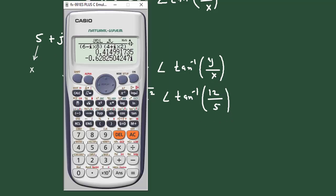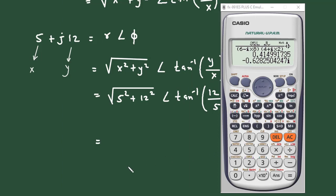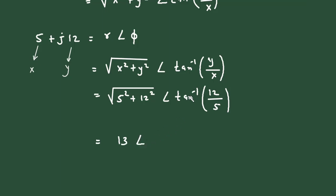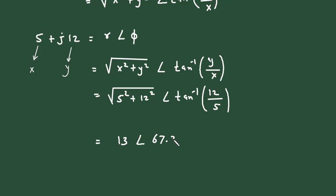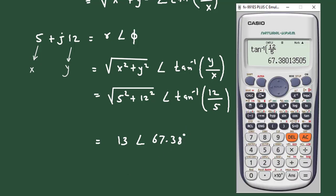If we simplify this in a calculator, we get 13 at an angle tan inverse of 12 by 5, which gives us 13 at an angle 67.38 degrees.